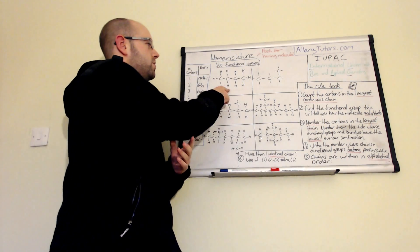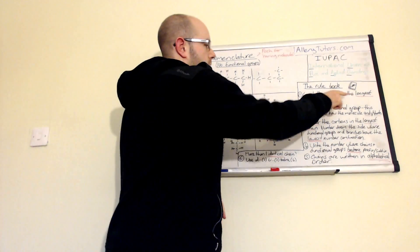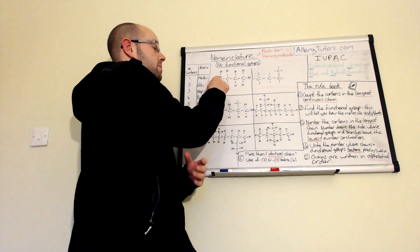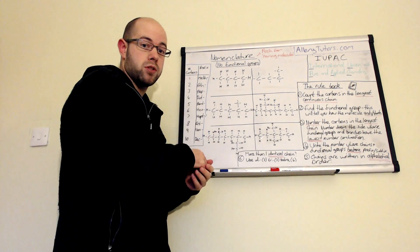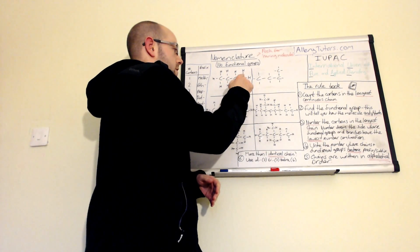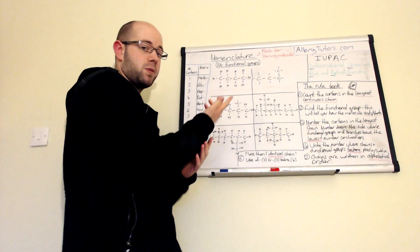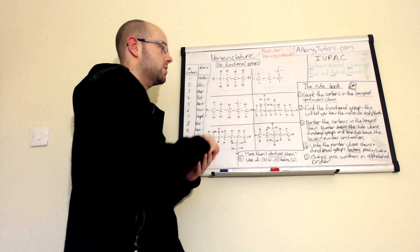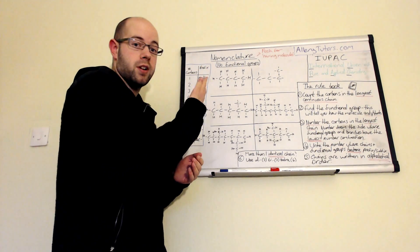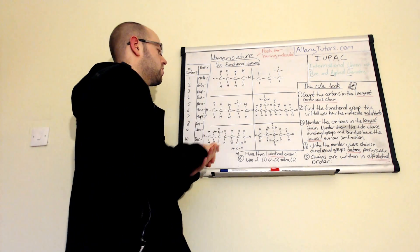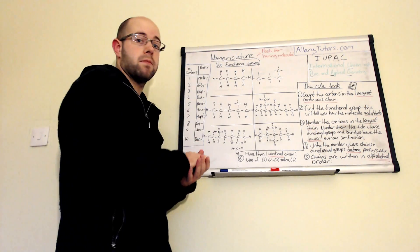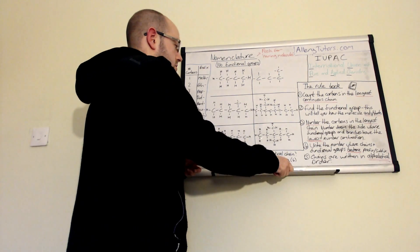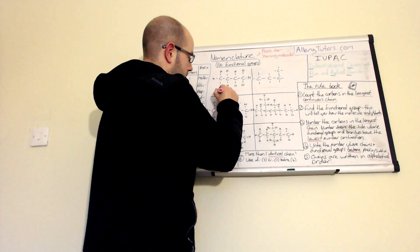Starting with the first molecule at the top - we need to count the number of carbons in the longest continuous chain. The longest chain is the most carbons your finger can pass along without taking your finger off the page or going backwards. In this case it's very straightforward: we start here and count one, two, three, four carbons in a row. There's no more carbons and no branching at all. So this is just straightforward butane - four carbons, no double bonds, no branching, no functional groups.